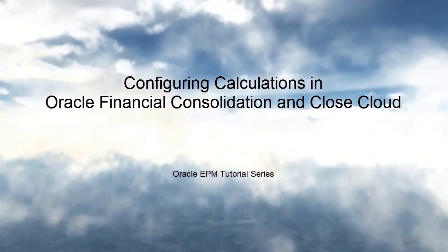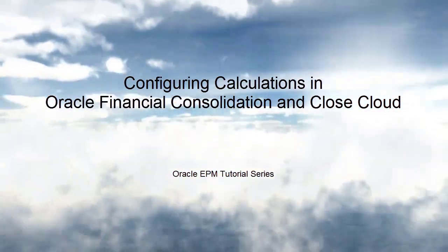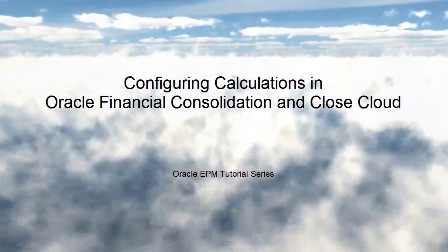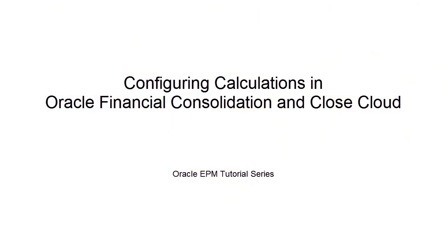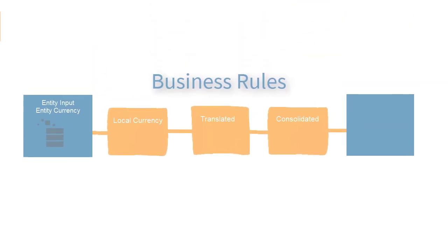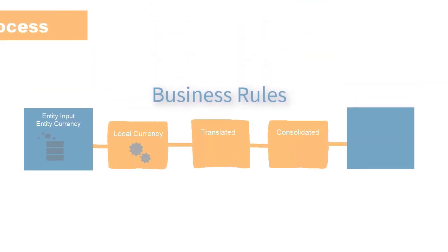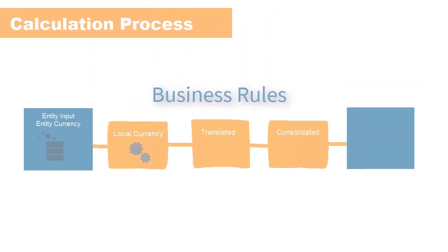Welcome to this step-by-step tutorial on how to add calculations to the configurable rules in Oracle Financial Consolidation and Close Cloud. When you run consolidations, Financial Consolidation and Close Cloud executes a sequence of standard business rules to calculate the account values for each entity.